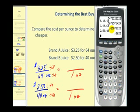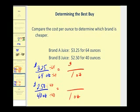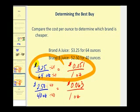So you can see brand A is approximately five cents per ounce, and brand B is a little bit more than six cents per ounce. Let's go ahead and record this. And it looks like brand A is cheaper again, therefore the best buy.